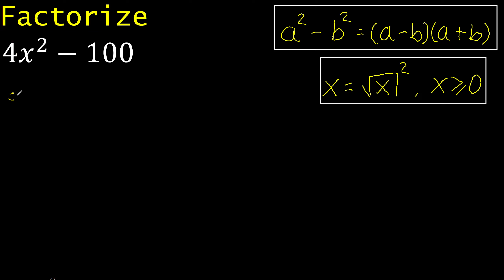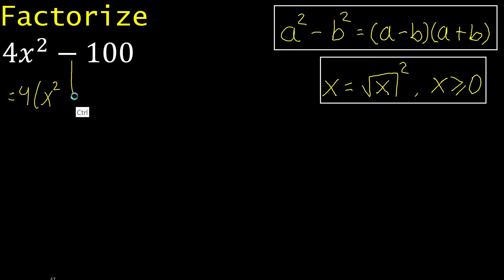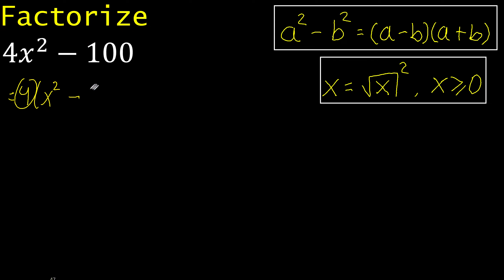Here is 4, therefore, like this, because 4 multiplied by x exponent 2 is here, minus 100 divided by 4 is 25.